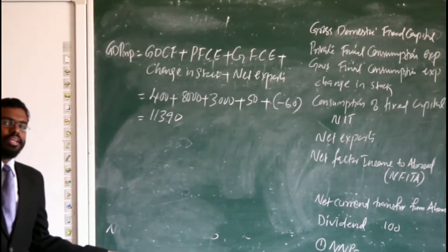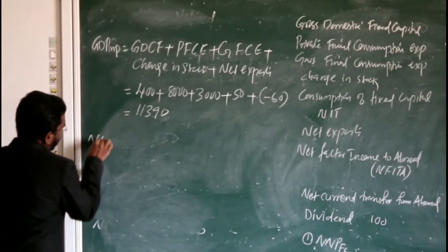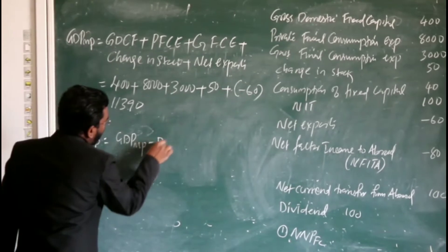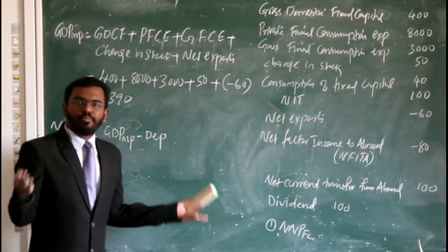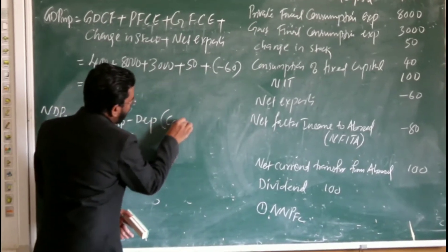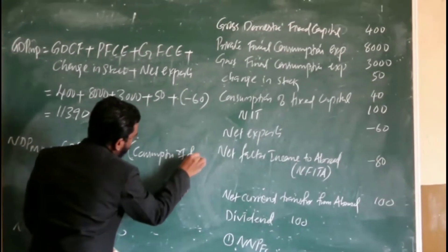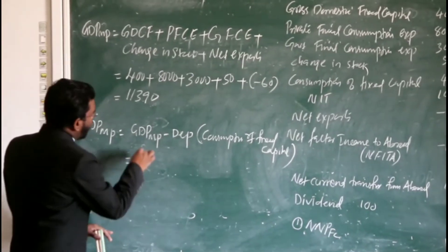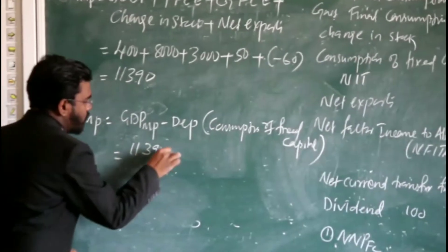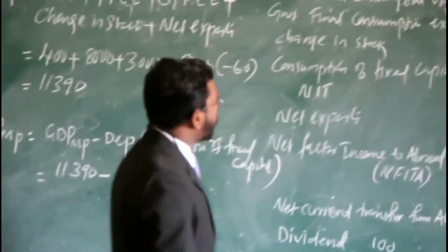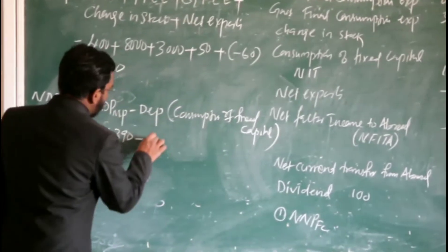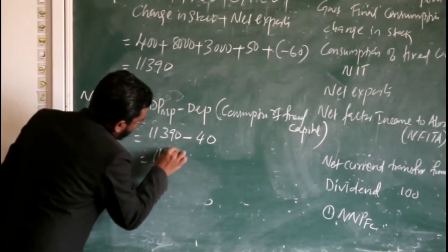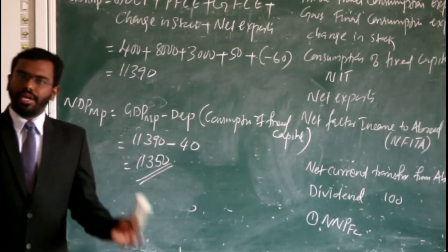From this GDPMP, we can easily calculate NDPMP. Under the formula, NDPMP equals GDPMP minus depreciation. Here depreciation is consumption of fixed capital. That is equal to GDPMP 11,390 minus consumption of fixed capital 40. So the answer is 11,350. This is our NDPMP.